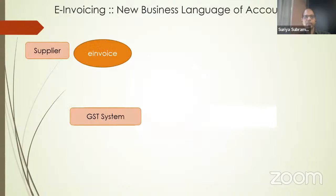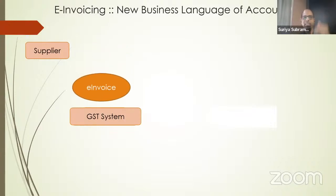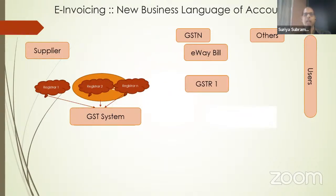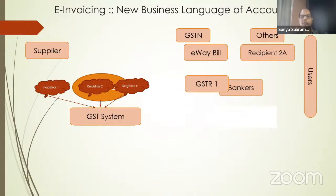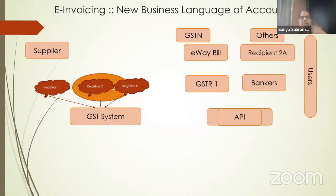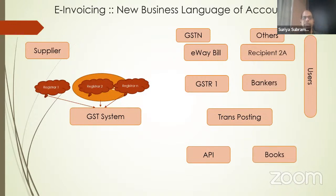Here is a small animation illustrating the same flow. From the supplier, the e-invoice goes to the GST system. From one of the registrars, the invoice goes to the e-way bill portal and to GSTR1 — the government portal run by GSTN. It also goes to the recipient's GSTR 2A. There is also a proposal to send these invoices to other players down the line, like bankers. Once the recipient receives it, transactions can be posted via APIs into accounting software.